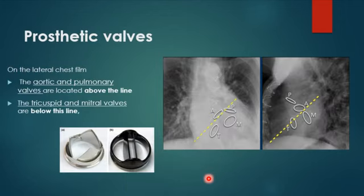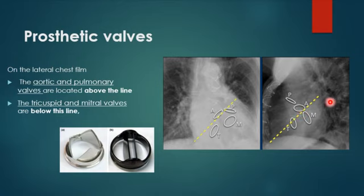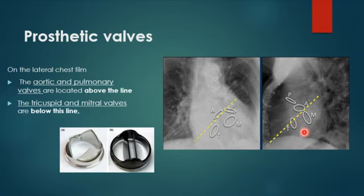The best way to determine the exact type of prosthetic valve is to look at the lateral radiograph. Draw a line from the carina or the base of the heart toward the apex. Valves located above this line are either aortic or pulmonary; those below are mitral or tricuspid. The tricuspid is more anterior and more inferior. The pulmonary is more superior and superficial. The aorta and mitral are very close to the line — one above, one below.